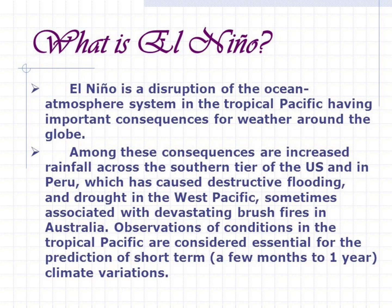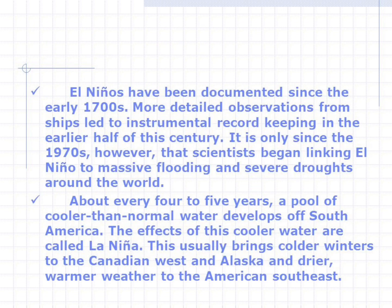El Niño events have been documented since the early 1700s, with more detailed observations from ships leading to instrumental record keeping earlier this century. It is only since the 1970s that scientists began linking El Niño to massive flooding and severe droughts around the world. About every four to five years, a pool of cooler than normal water develops off South America — the effects of this cooler water are called La Niña, which usually brings colder winters to the Canadian west and Alaska and drier, warmer weather to the American southeast.